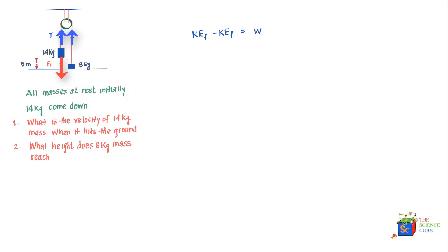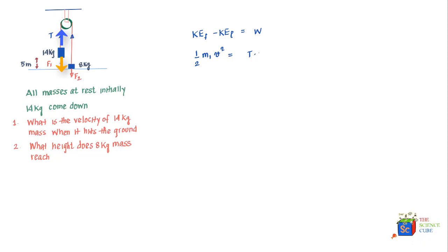Let's consider mass one, the 14 kilogram mass. The final kinetic energy is one-half m1 v-squared, which we need to find, minus the initial kinetic energy which is zero because it starts from rest. The work done is the sum of work done by tension and work done by force F1. The work done by tension is the dot product of T with the displacement of 5 meters as it moves down.